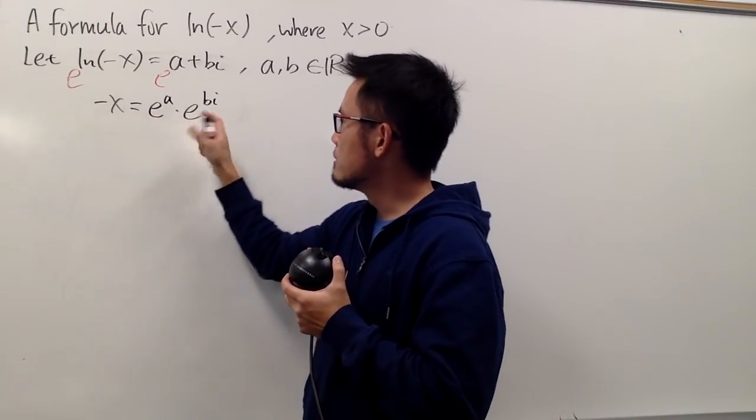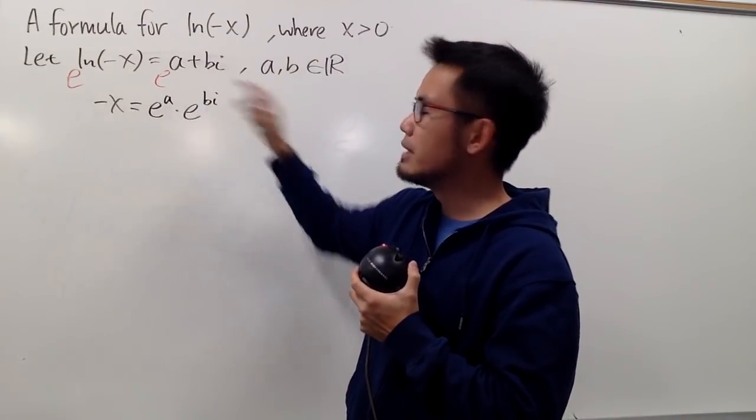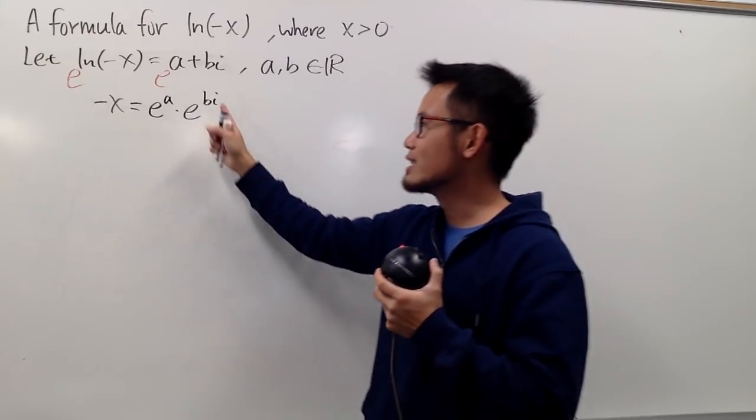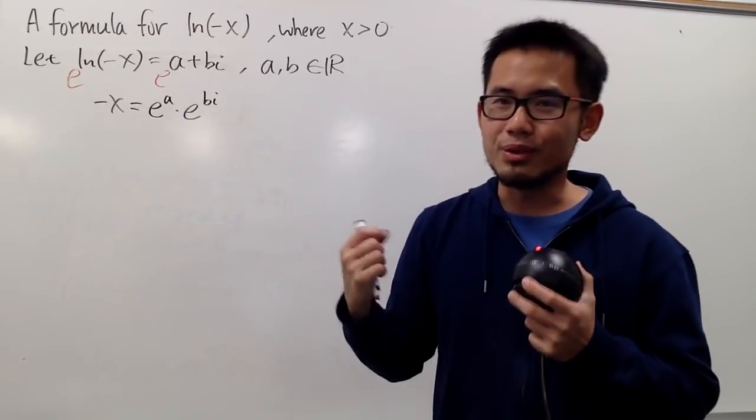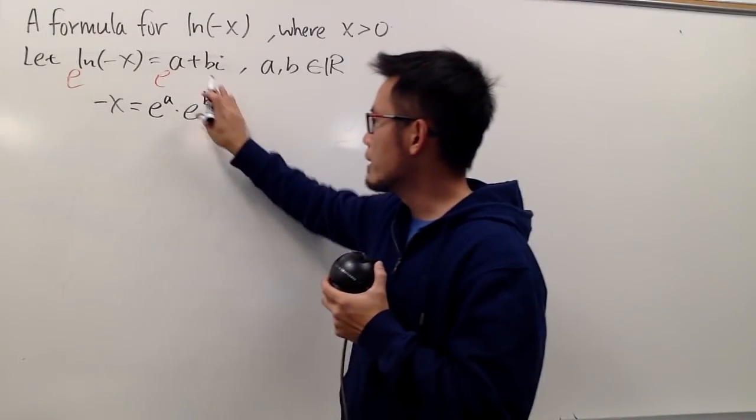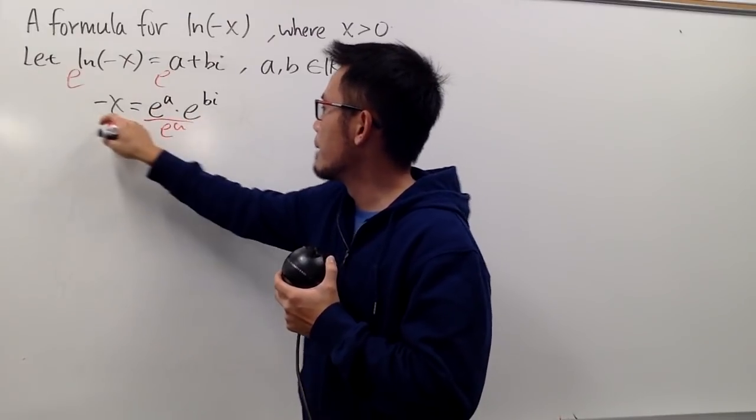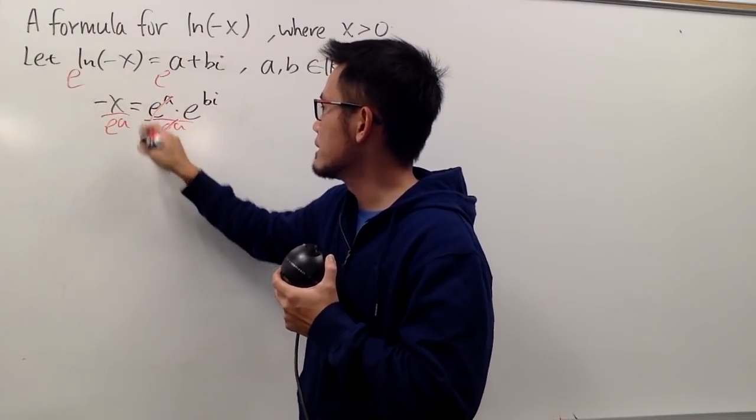And we can look at this is the trouble, e to the bi. We have a complex exponent. But this is not bad at all, because we can use the Euler's formula to take care of that. So we can take care of this. And in the meantime, let's also divide e to the a on both sides. So cancel this out.